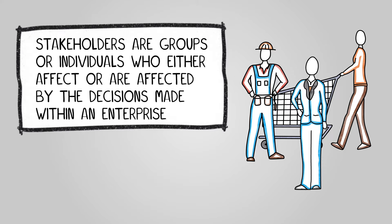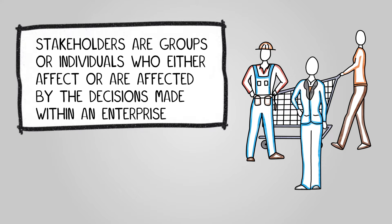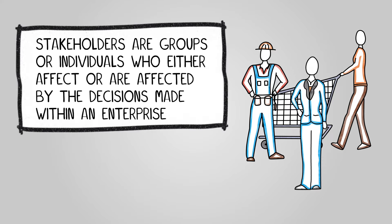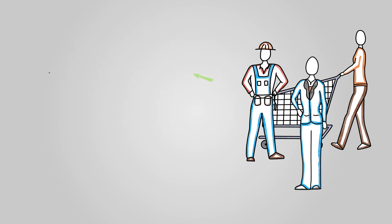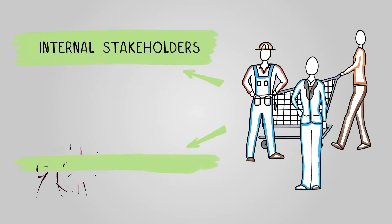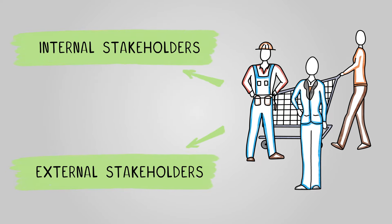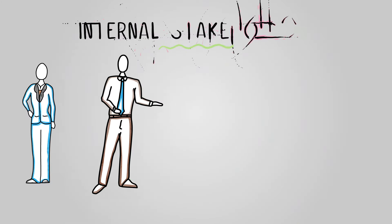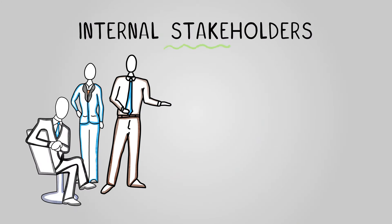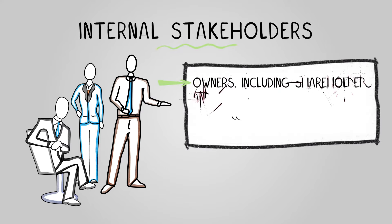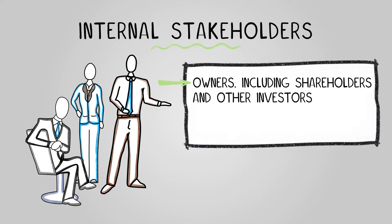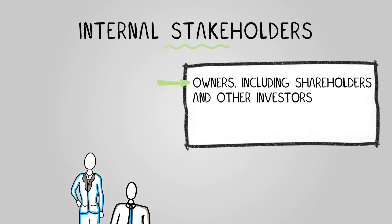Or people outside of the business, such as lenders and customers. For simplicity, we'll break down stakeholders into two major categories: internal stakeholders and external stakeholders. First, let's talk about internal stakeholders — these are the people who are part of the enterprise itself. For example, owners including shareholders and other investors are internal stakeholders.